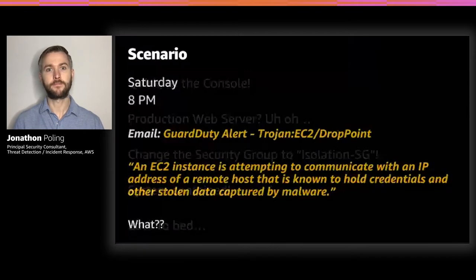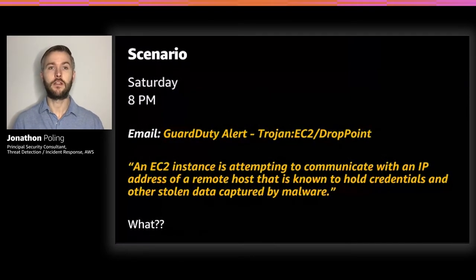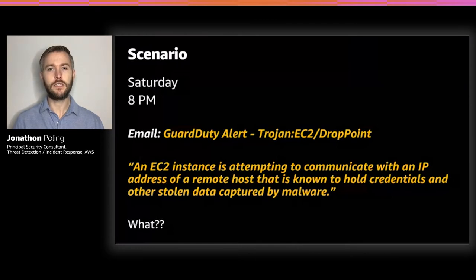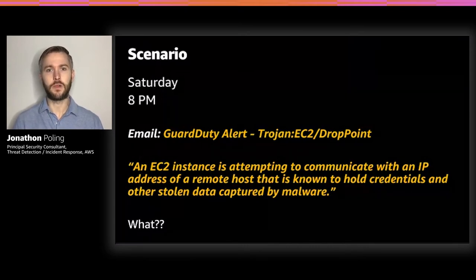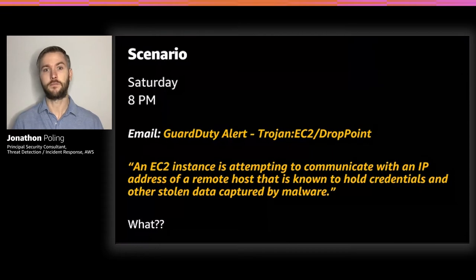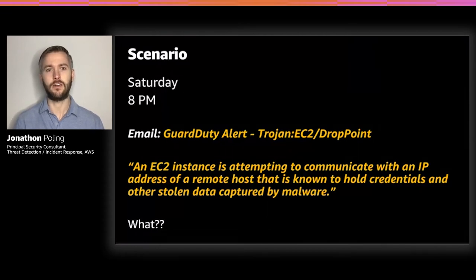Back to bed. Saturday, 8 PM — another work email notification. This time the email subject: another GuardDuty alert for an EC2 drop point. The EC2 instance has attempted to communicate with an IP address of a remote host. This instance should be isolated. You try to connect to the instance using SSH, but it's blocked, as it should be — the isolation security group doesn't allow connections. So this instance should be completely isolated. Then how is this still connected to the internet? You feverishly send out emails to everyone you know, begging for help.